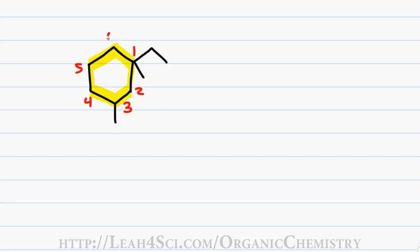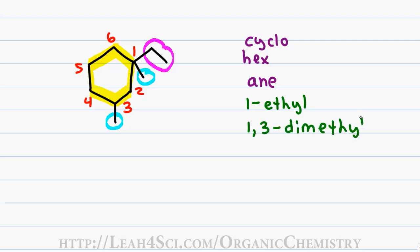Six carbons in the ring gives me a first name of hex. The ring gives me a prefix of cyclo and only single bonds gives me a last name of Ane. I have a two carbon substituent on carbon one giving me a one ethyl and I have two one carbon substituents on both one and three giving me one comma three dimethyl. Since I have multiple substituents, the primary position is not self-understood and so I have to include the numbers before each substituent.